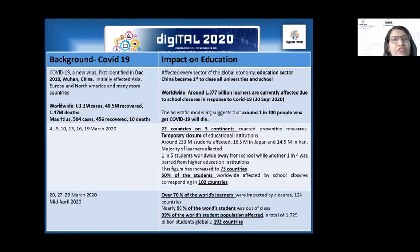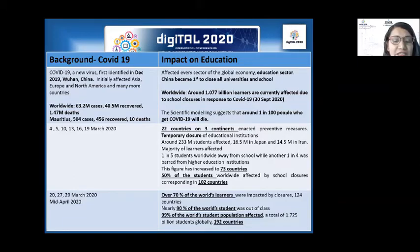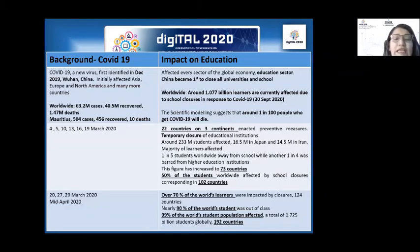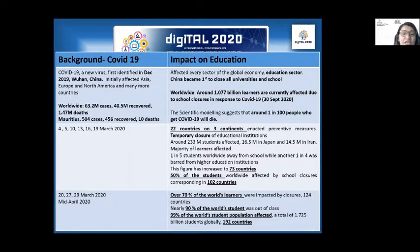COVID-19 was initially identified in Wuhan, China in December 2019. It affected Asia, Europe, and more countries around the world, and eventually affected every sector. One of those sectors is education. You will find that it spread from 22 countries to 73 countries to 192 countries being affected, and students had to stay at home. The world student population being affected went from 50% on day one to 99% by mid-April.